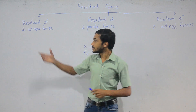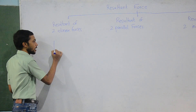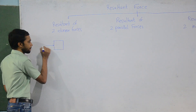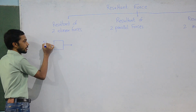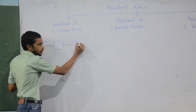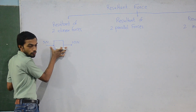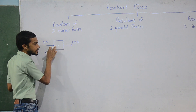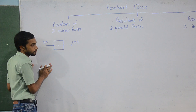Let's move on to resultant of two collinear forces. If a force of 5 newtons is given on one side and 10 newtons on the other side of an object, and these two forces have the same line of direction — meaning they act in the same line — we call them collinear forces.